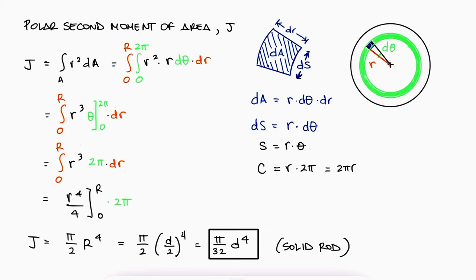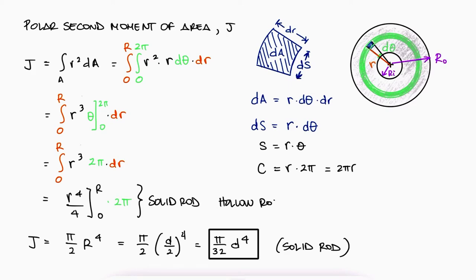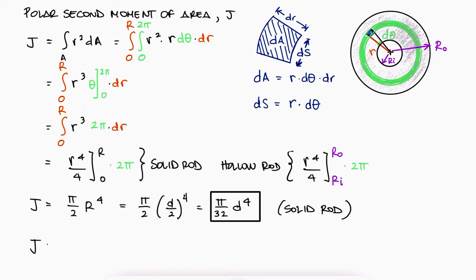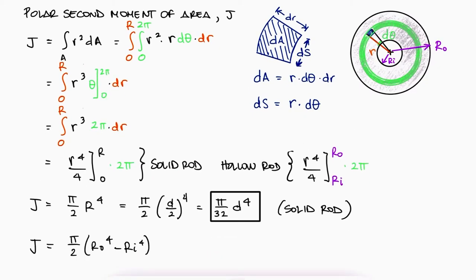If we're also interested in calculating J for a hollow rod, or a thick cylinder, whose cross-section already looks like a thick ring that goes from inner radius to outer radius, the only difference would be the limits of the outer integral, ri to ro. The evaluation of that second integral would result in an expression for J of pi over 2 times the difference of the radii to the fourth, or pi over 32 outer diameter to the fourth minus inner diameter to the fourth.